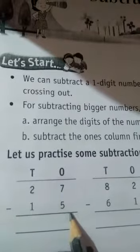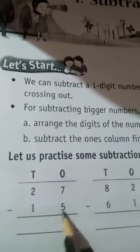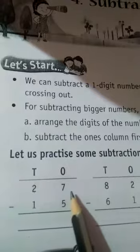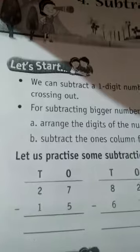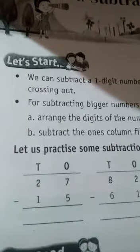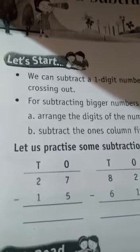So 7 minus 5. How do I do subtraction? We have to subtract the numbers. 7 fingers you have to take in your hand, 7 fingers.